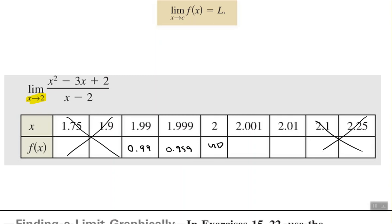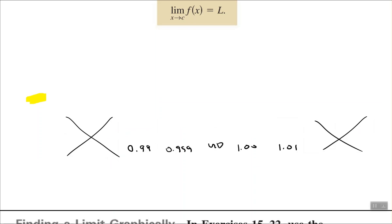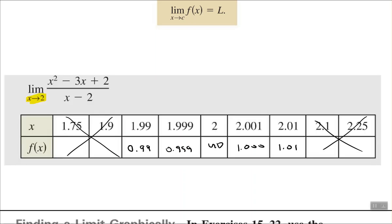If we're approaching two from our right-hand side, then 2.01 plugged in gives about 1.01, and 2.001 plugged in gives about 1.001. As you can see, from the right and from the left, we get closer and closer to 1.